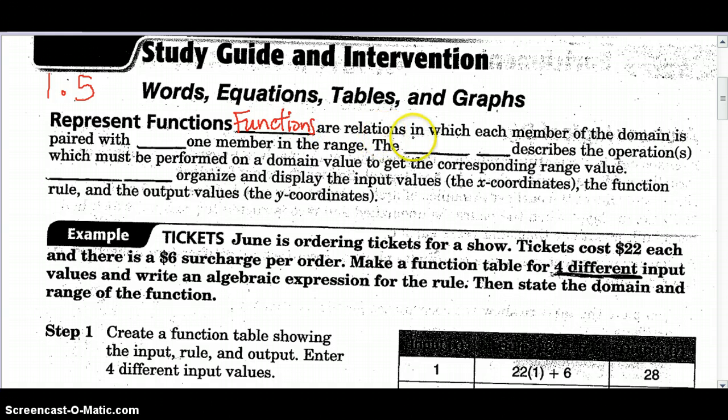Functions are relations in which each member of the domain, remember the domain are your x values, each member of the domain is paired with exactly one member of the range. So every x has exactly one y value. The function rule describes the operation which must be performed on the domain to get the corresponding range value. We will use function tables to organize and display the input values. Let me show you what this all looks like.